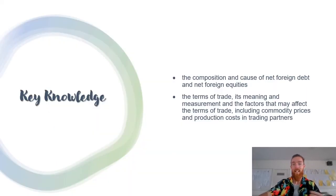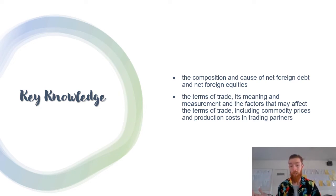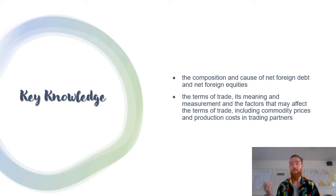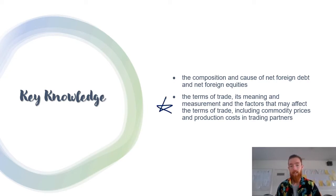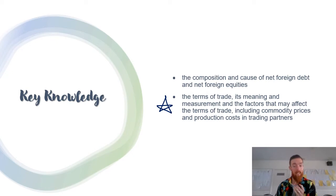Our key knowledge today is the composition and cause of net foreign debts and net foreign equities. It's going to be super simple — mainly definitional. You just need to know what they are and what changes in them mean. Then we've got the terms of trade: its meaning, measurement, and the factors that may affect it, including commodity prices and production costs in trading partners. Students historically find the terms of trade really difficult, so we're going to break it down so you can absolutely destroy it on exams.